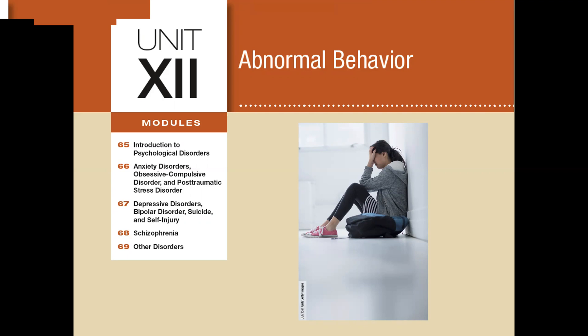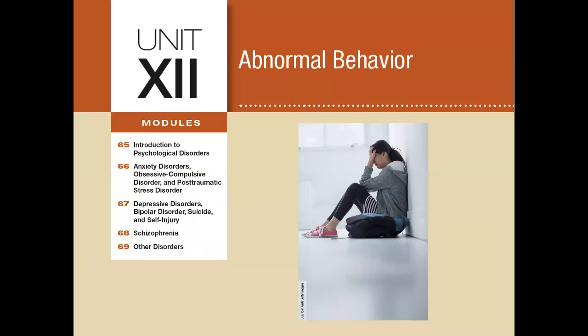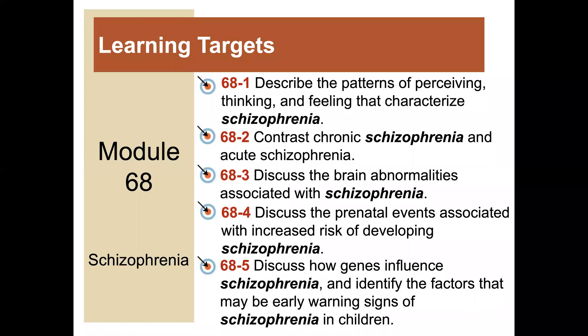It is a fairly long module with five learning targets. The first is to describe the patterns of perceiving, thinking, and feeling that characterize schizophrenia. The second is to contrast chronic and acute schizophrenia, discuss brain abnormalities associated with schizophrenia, discuss prenatal events associated with risk of developing it, discuss how genes influence schizophrenia, and identify early warning signs in children.